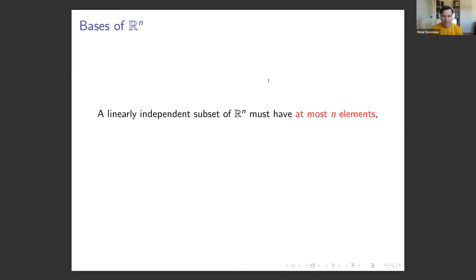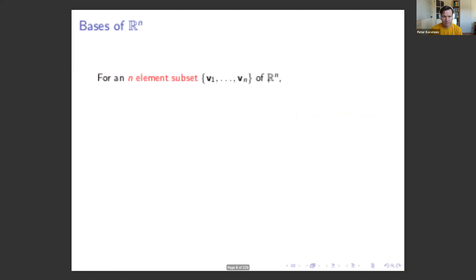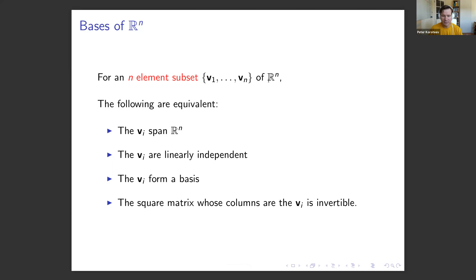A linearly independent subset of Rn must have at most n elements, and a spanning set of Rn must have at least n elements. So every basis of Rn has exactly n elements. For an n-element subset V1 through Vn of Rn, the following statements are equivalent: those vectors span Rn, they are linearly independent, they form a basis, and the square matrix whose columns are the vectors vi is invertible.